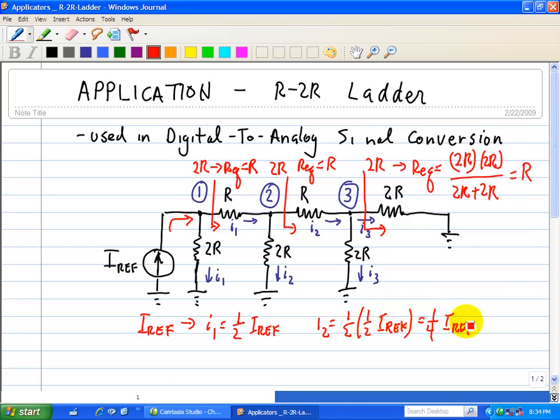Then finally, I2 enters node 3, but I3 is just half of I2, since these two resistors are equal. Hence, I3 is just one half of I2, which is just one half of one fourth of I reference, which is equal to one eighth I reference.